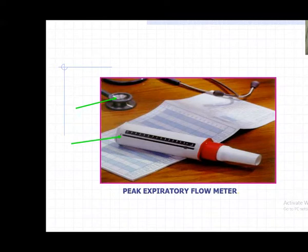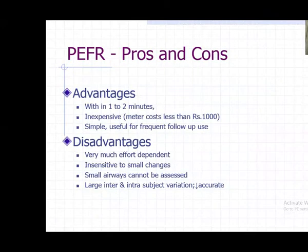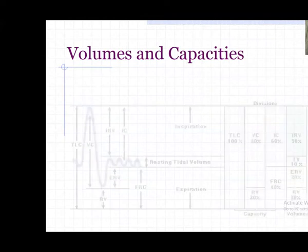Peak expiratory flow measures the maximum amount of air a person expires in the first 10 milliseconds - you give one quick blow and measure it. It is very effort-dependent, so you must ensure the person is making a good effort. It costs less than one thousand rupees, making it accessible for every patient to monitor their asthma severity.